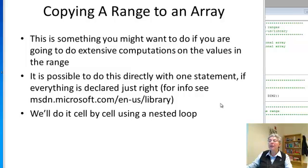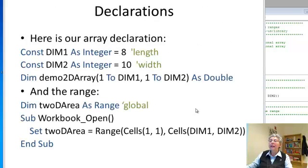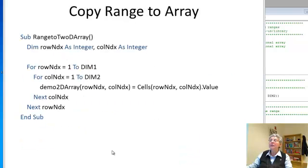So the first thing we do is copy an array to a range. I'm setting up two dimensions, one is 8 and one is 10 using constants. I'm declaring an array 1 to dim1, 1 to dim2, so it has 8 rows and 10 columns. And here I'm declaring a range and to set up a range I do it when the workbook opens and I'm calling the range 2D area. I'm making it go from the upper left corner 1, 1 to the lower right corner, cell dim1, dim2. So the array and the range are exactly the same shape.